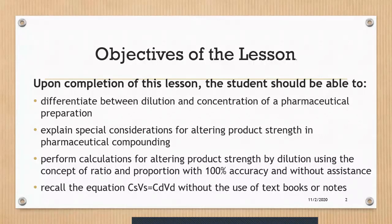The objectives for today include being able to differentiate between a diluted and a concentrated preparation, understanding the implications and considerations when altering product strength during pharmaceutical compounding, and learning concepts to perform calculations for determining the ingredients needed to alter a product's concentration — whether diluting or concentrating it.